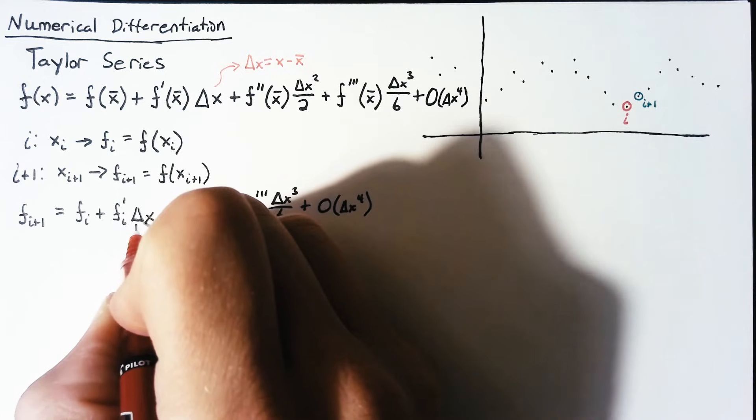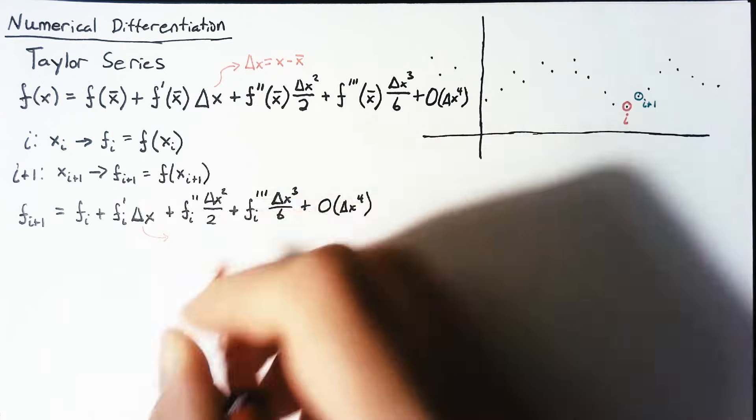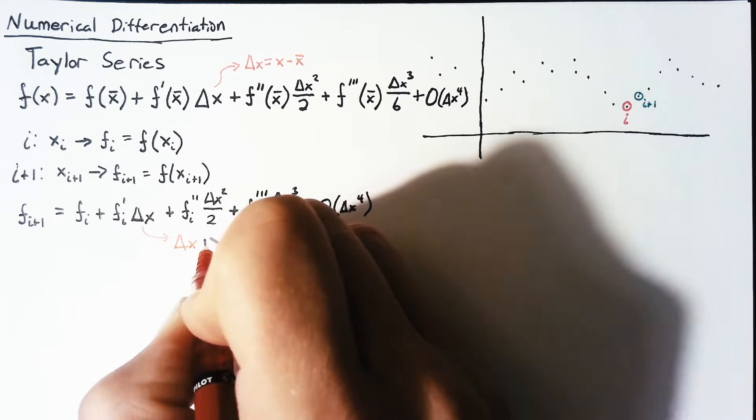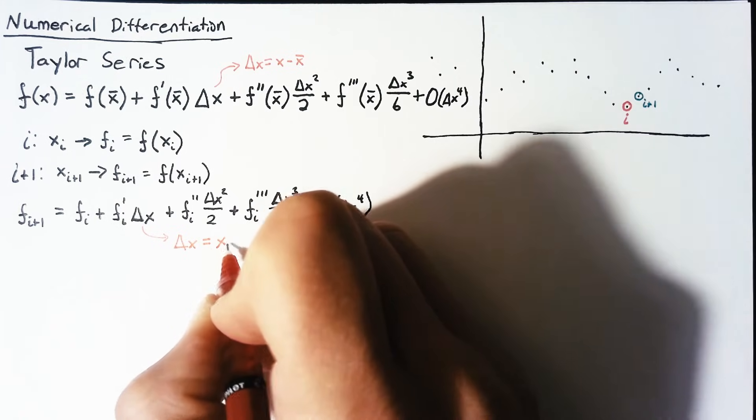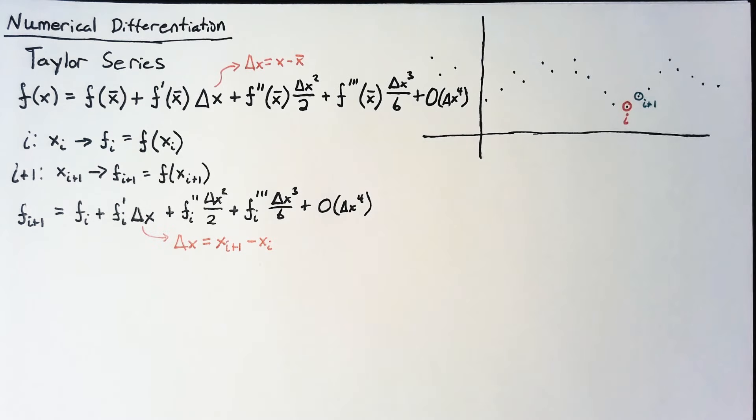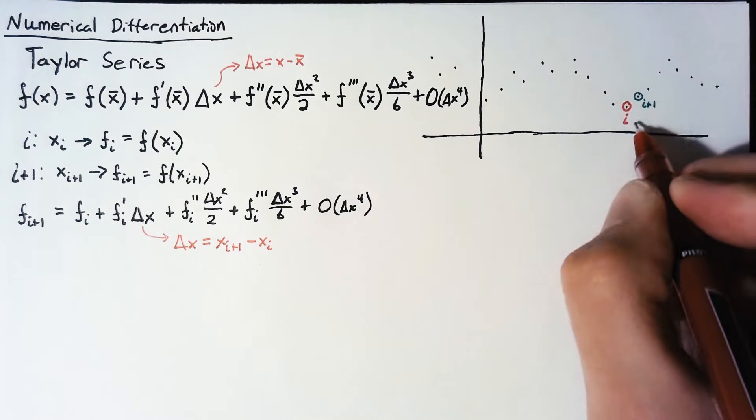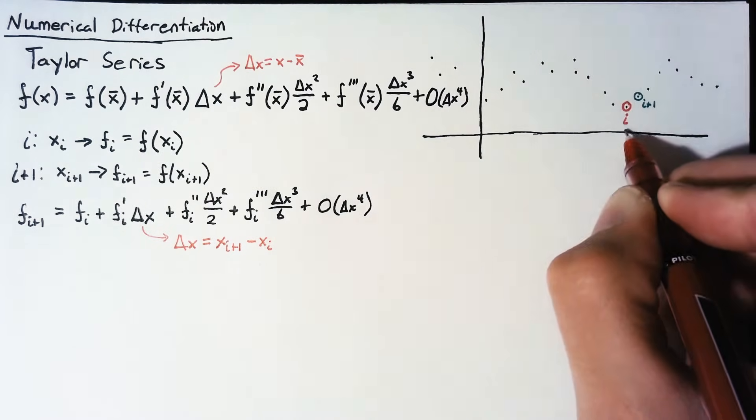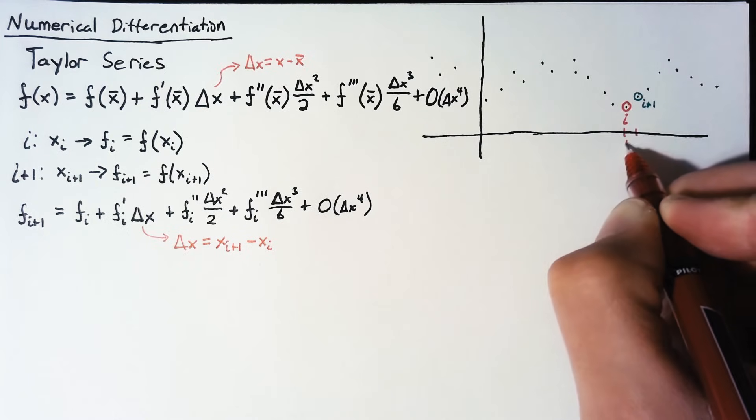This delta x that we have here is going to be x sub i plus 1 minus x sub i. So we're taking this value x sub i plus 1, subtracting off this, and we get this little delta x.